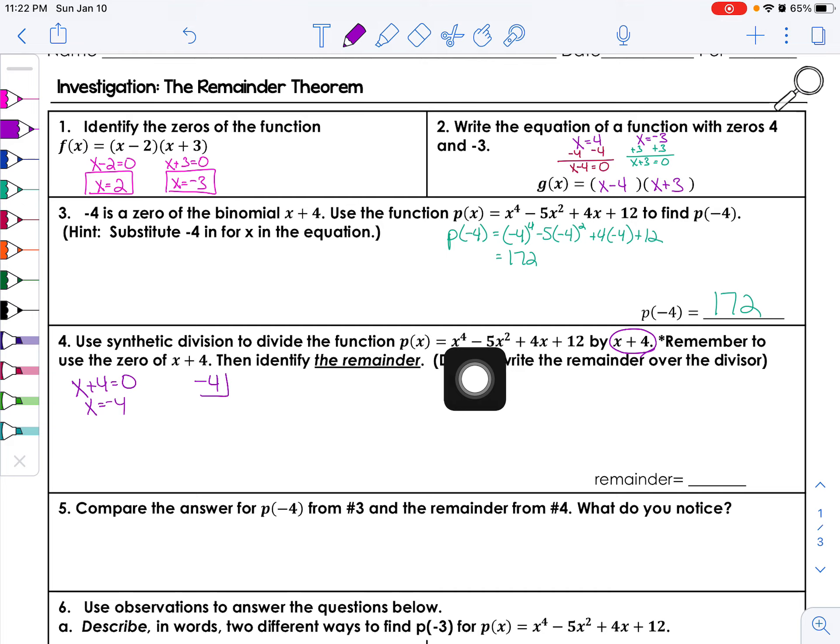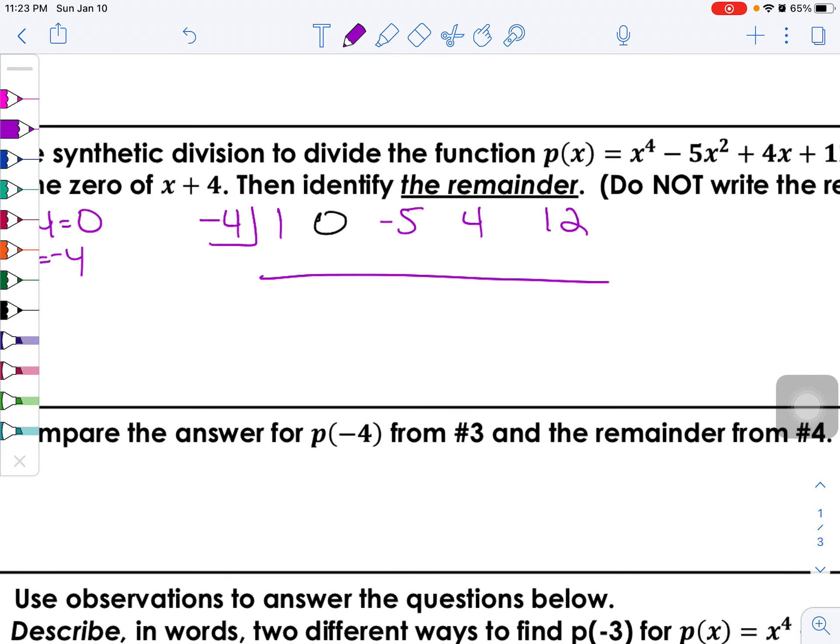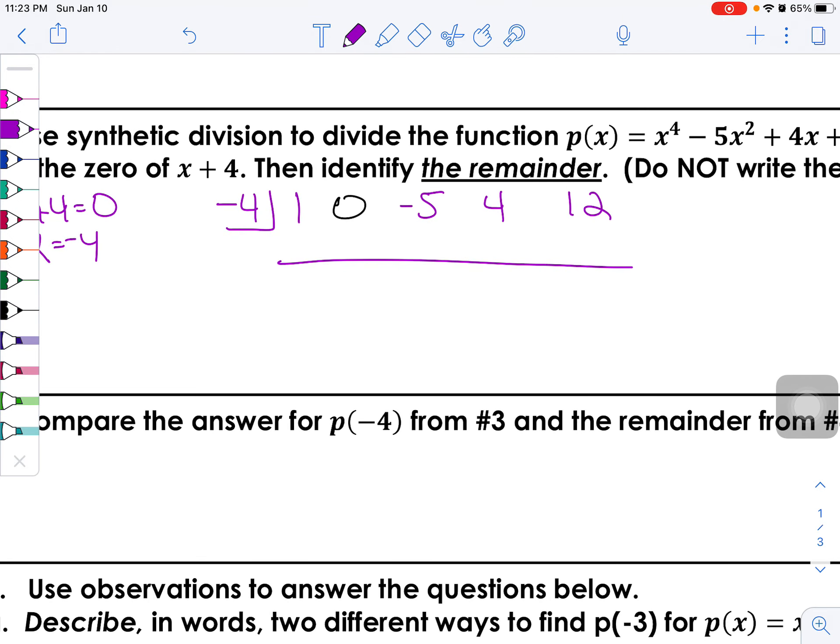Okay, so I'm gonna use negative four in my little box here to remind myself I'm doing synthetic division. Now I want to pull all the coefficients, but remember, if we're starting with x to the fourth, I'm gonna need a placeholder here for x cubed. So I'm gonna have 1, the placeholder of 0, 0, then I've got negative 5, I've got 4, and I've got 12.